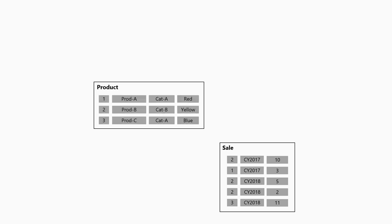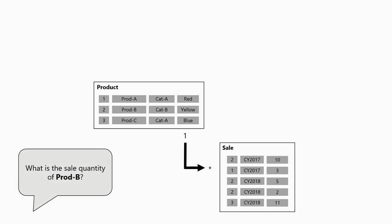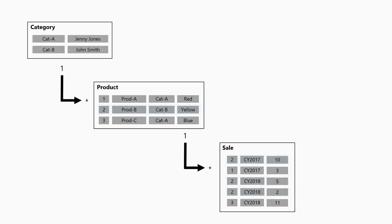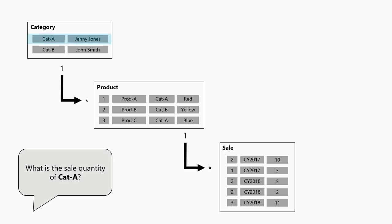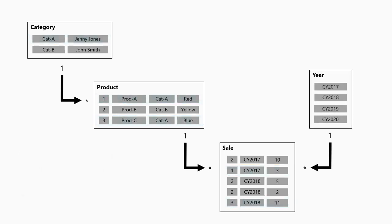Let's see by example. I have a sales table with a product key, a year, and a quantity, and a product table with a unique column of product IDs. We establish a relationship so that when a visual asks 'what is the sale quantity of product B?', the filter propagates from product down to the sales table, summing values of 10, 5, and 2. We might also have a category table, so category filters to product and product filters to sale—enabling questions like 'what were the sale quantities for category A?' giving us a result of 14.